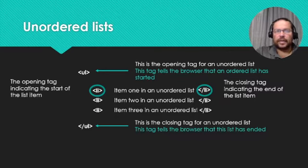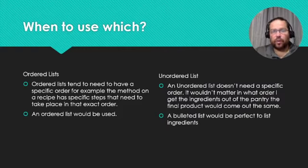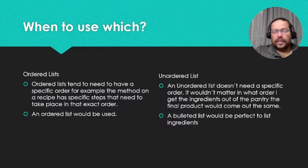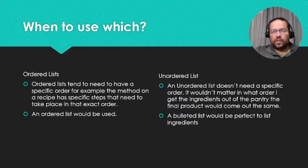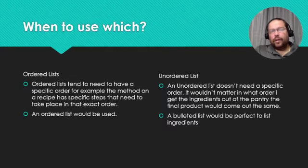So when to use which? Well, if you need to have something in a specific order, it's important to use an ordered list. For example, the method in a recipe would be saved in an ordered list because it is important that you follow that specific order when baking or cooking something.